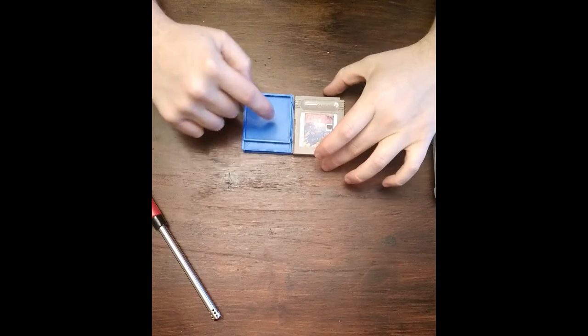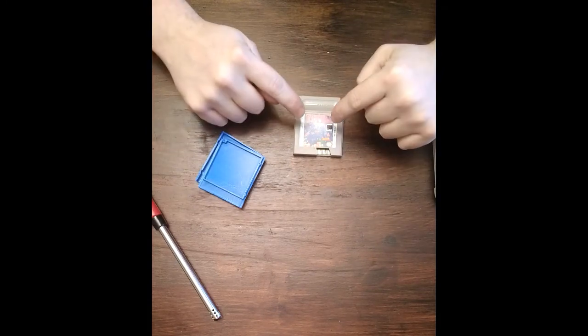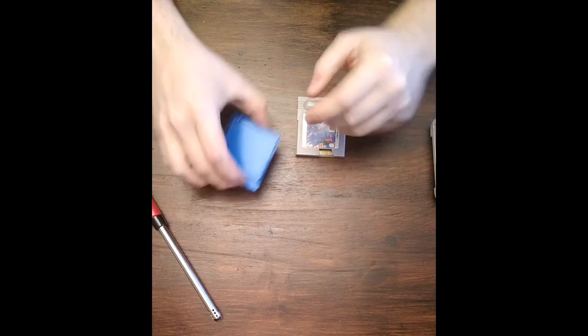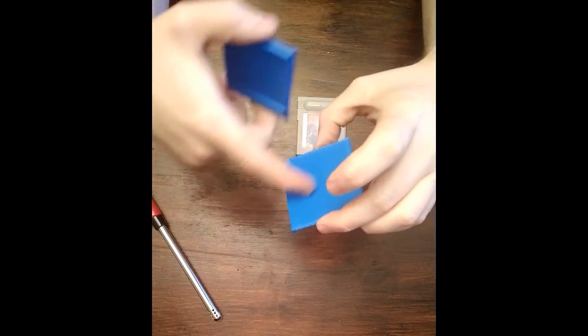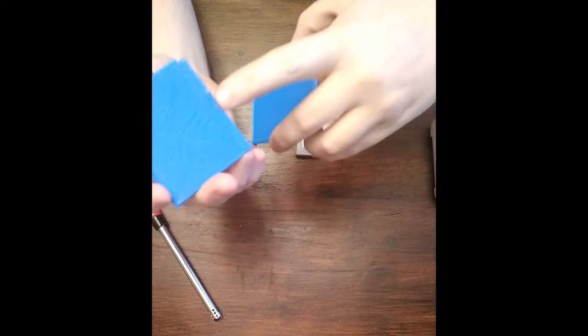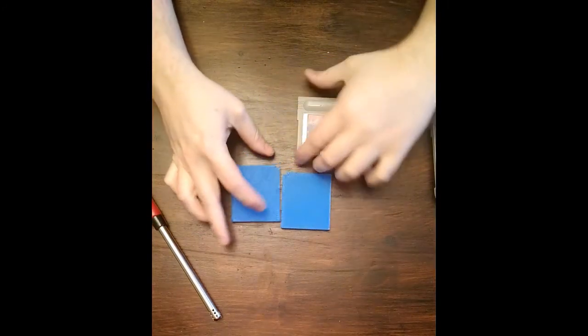So the first thing I did was hop on Thingiverse and found this replacement shell, which is pretty much a direct one-to-one replacement for the original. As you can see, it lacks the screw hole and it also doesn't have the indentation for the Nintendo logo, but as this isn't an officially licensed product, that's probably for the best.